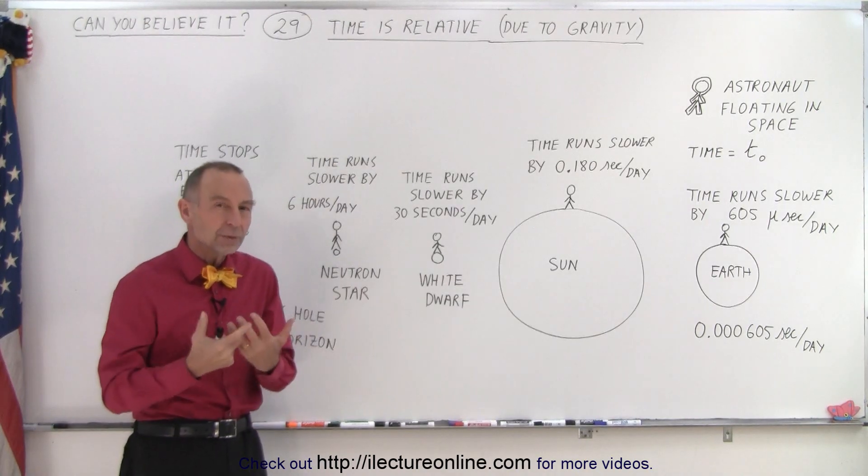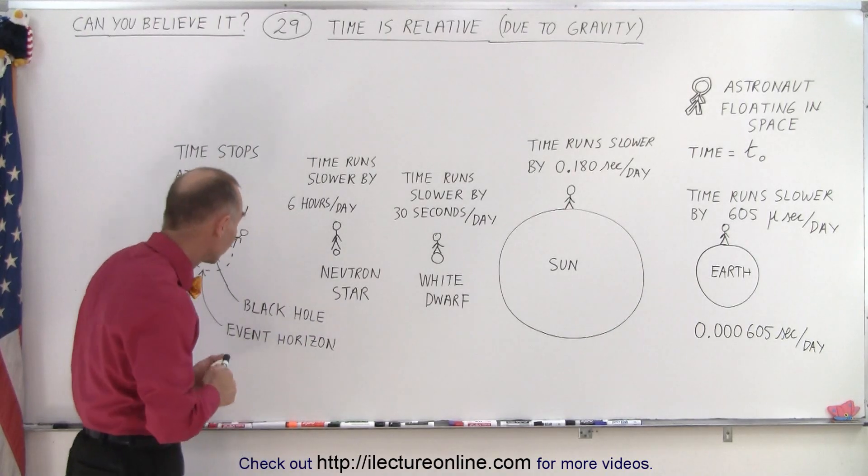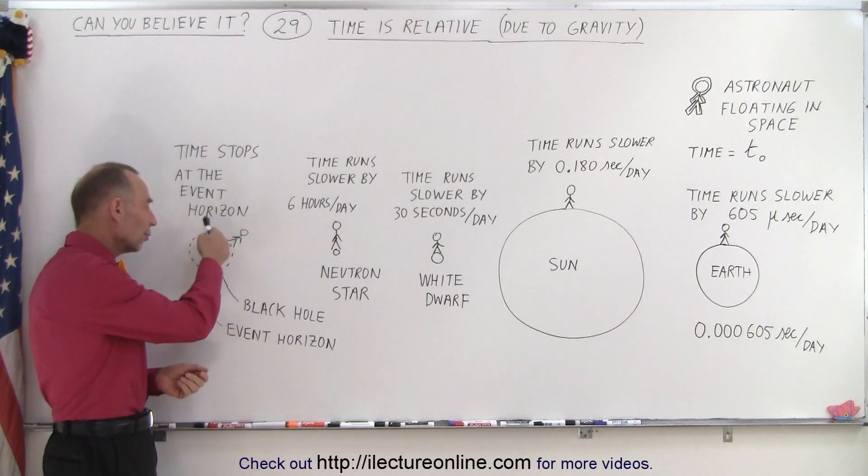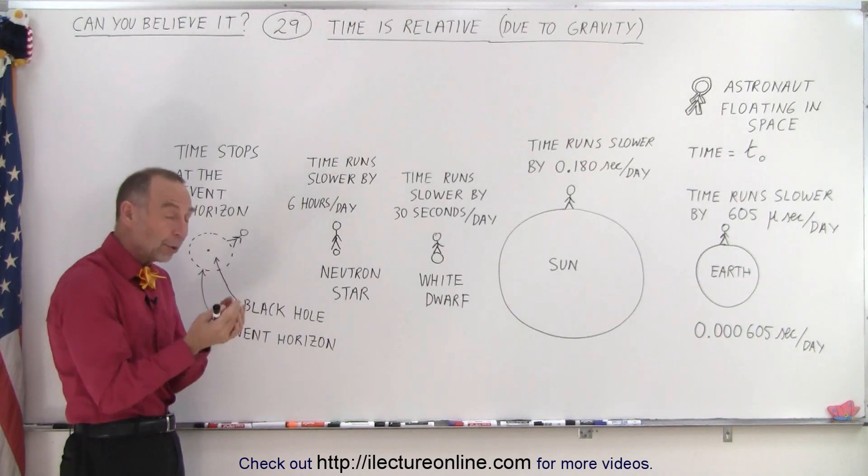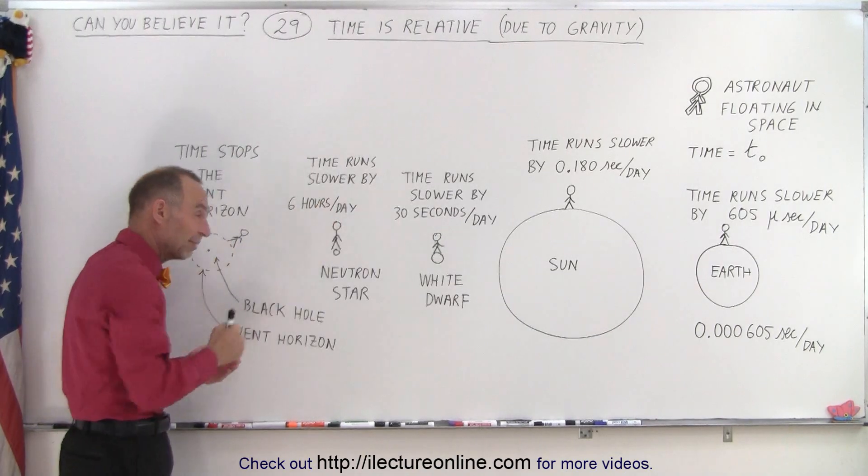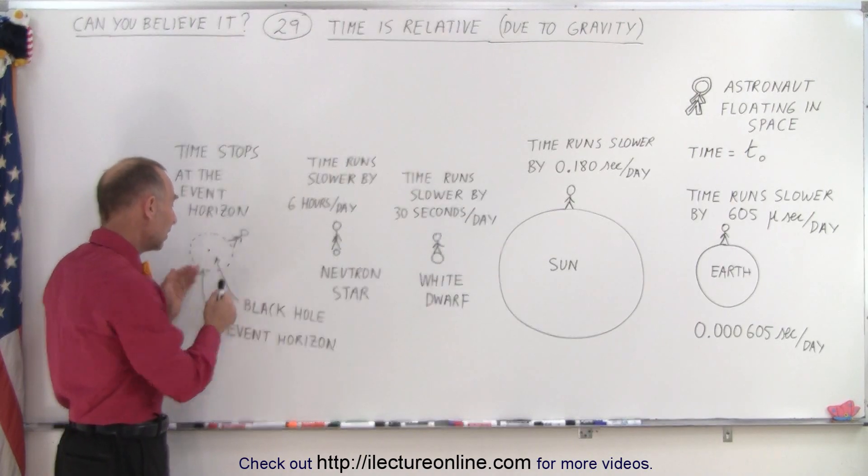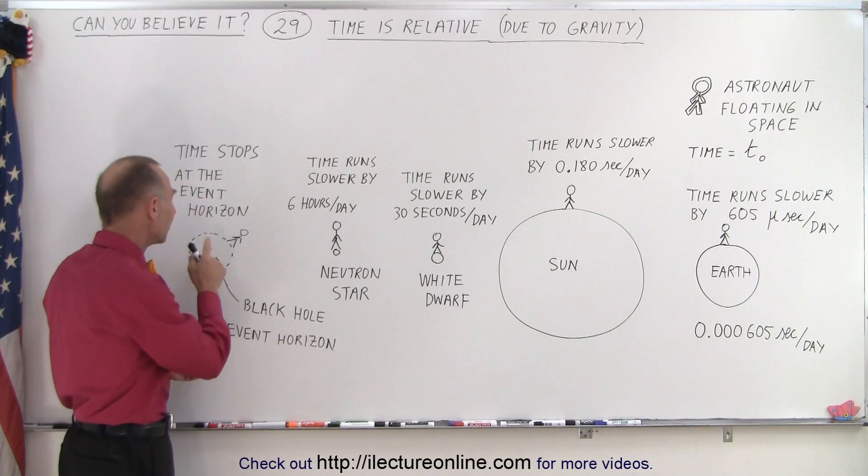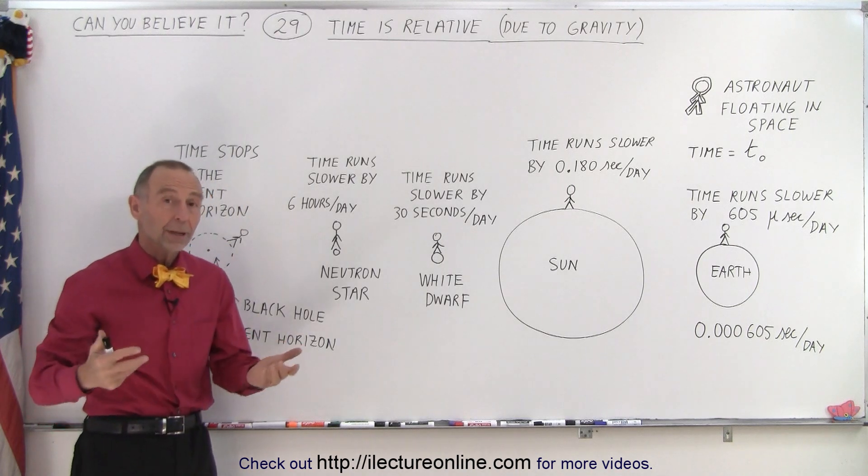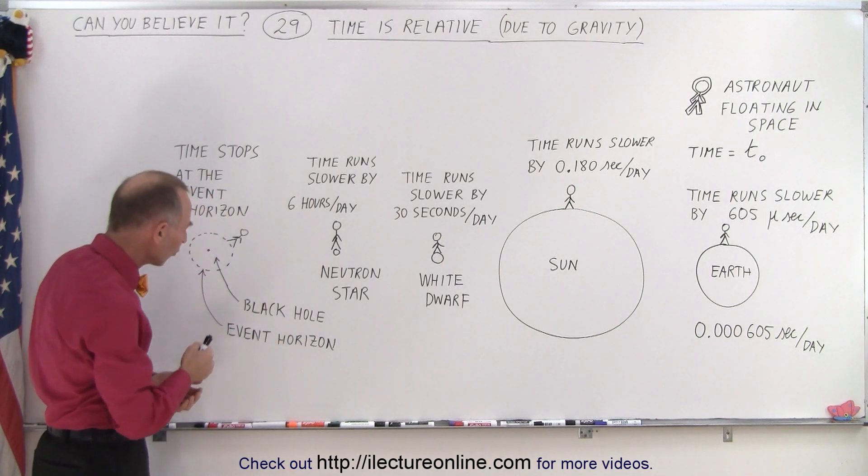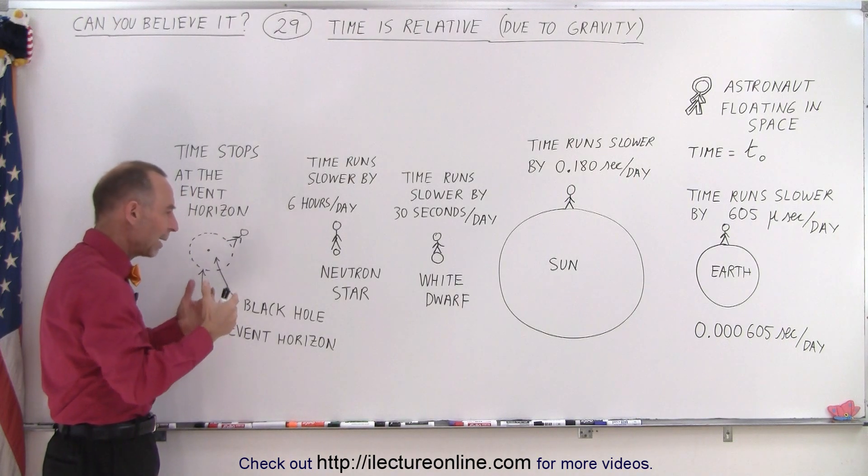And then there's the ultimate place where time eventually will stop. That place is a black hole. At the event horizon, that's the point around or the region around the black hole, where you need to travel at the speed of light just to get away from it. If you don't, gravity will simply pull you in. And if you're at the event horizon of a black hole, time will actually stop. Time will not progress. The gravitational force is so enormous at that location that time simply stops.